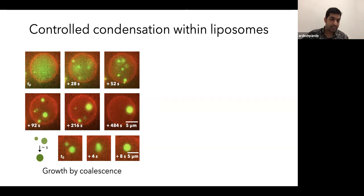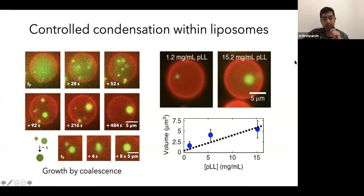One key characteristic of these condensates or liquid droplets is they fuse together. And you can see that in this time-lapse here as well. Moreover, you can control the size of these condensates. So it doesn't matter how much ATP you put outside. The size is dictated by how much polylysine you put inside. If you put less, you will get a smaller condensate. If you put more, you will get a bigger condensate. You can also see that nicely in this volume against the polylysine concentration graph, where you see a linear relationship between the two.